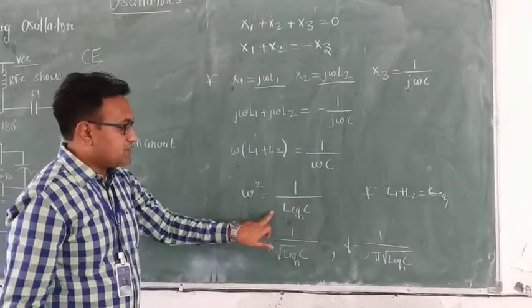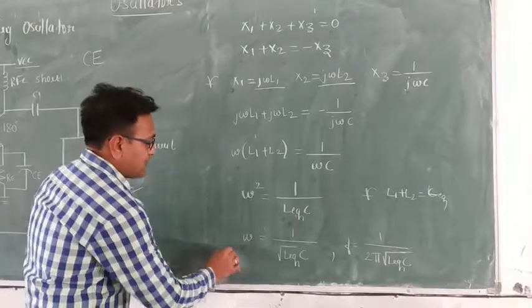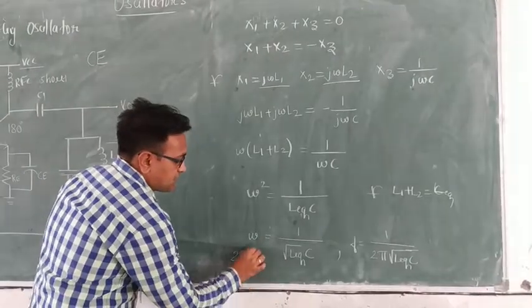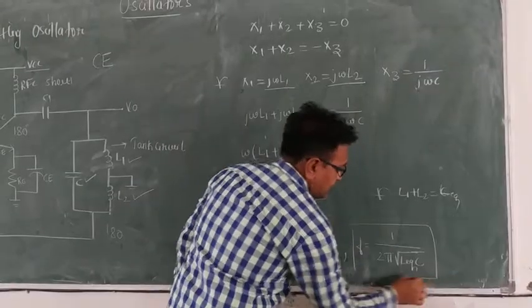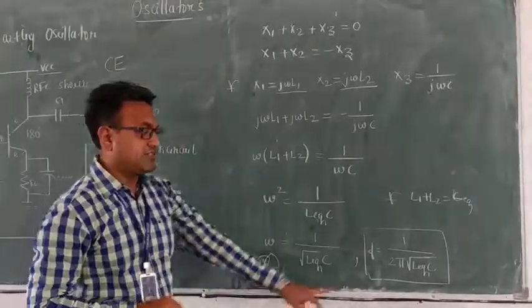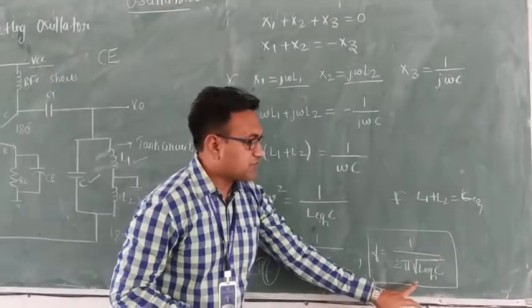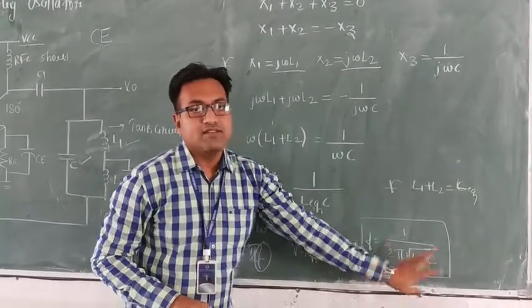Next, ω is equal to 1 over square root of L equivalent times C. And this omega can be written as 2πf. So frequency f equals 1 divided by 2π times square root of L equivalent times C.